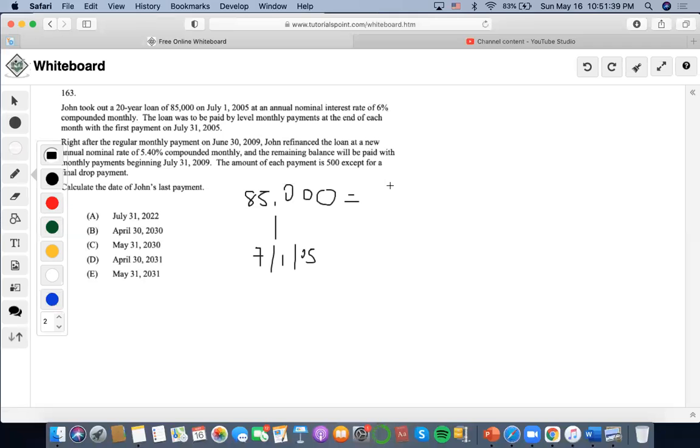And the loan by level payments, so X, it's monthly, so 12 times 20 equals 240 payments. Okay, so let's find X. Let's do that with the calculator. We can do 85,000 for the present value. So we're going to find out that payments are $608.97.